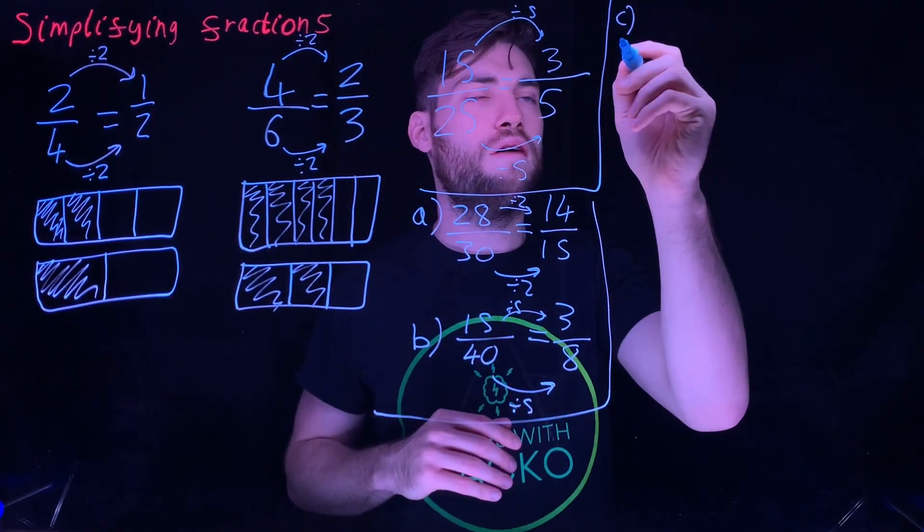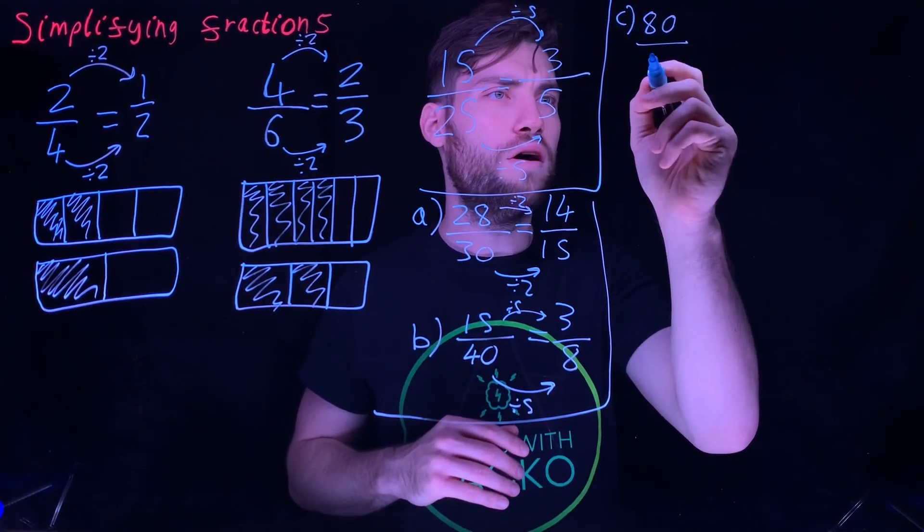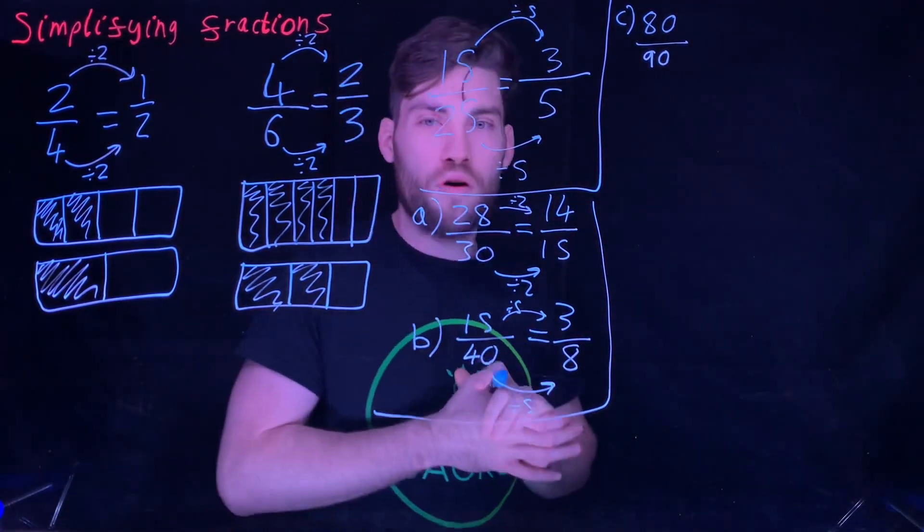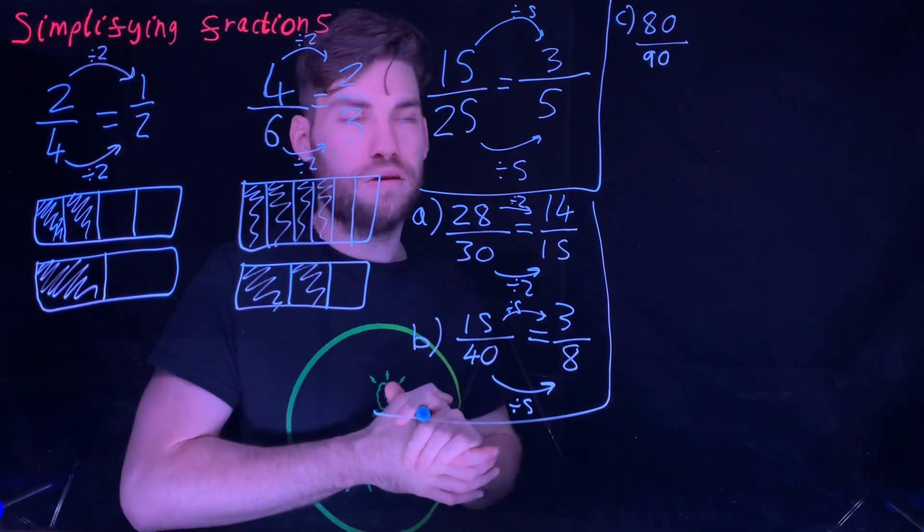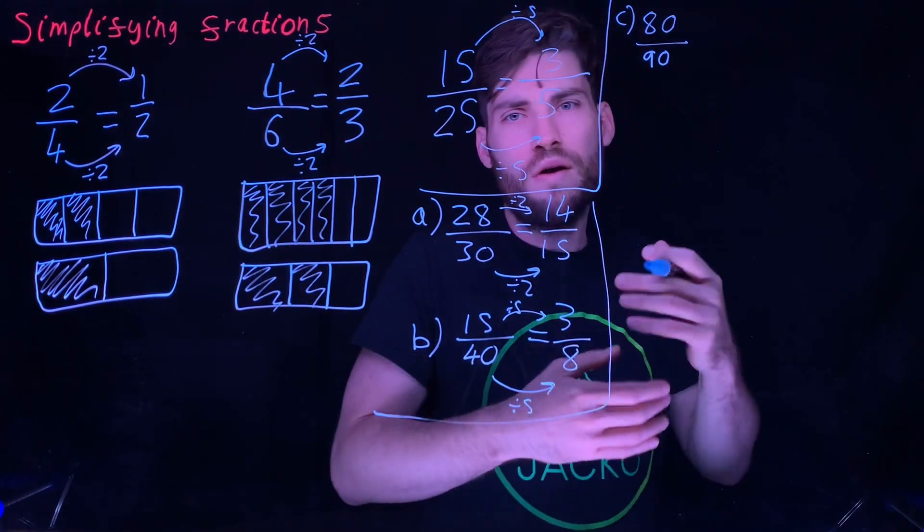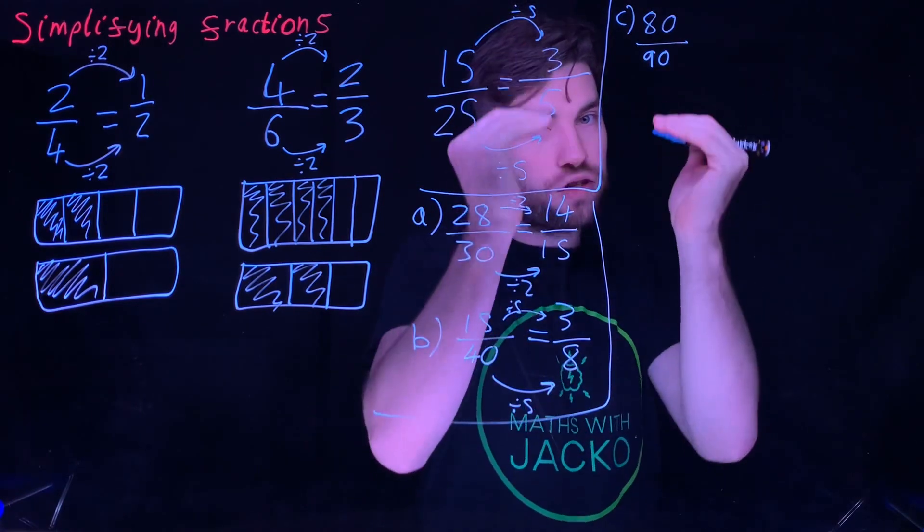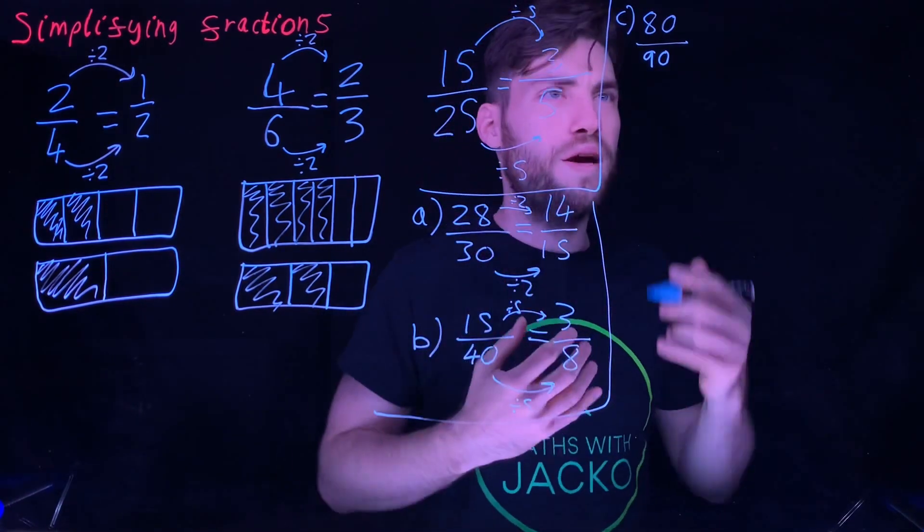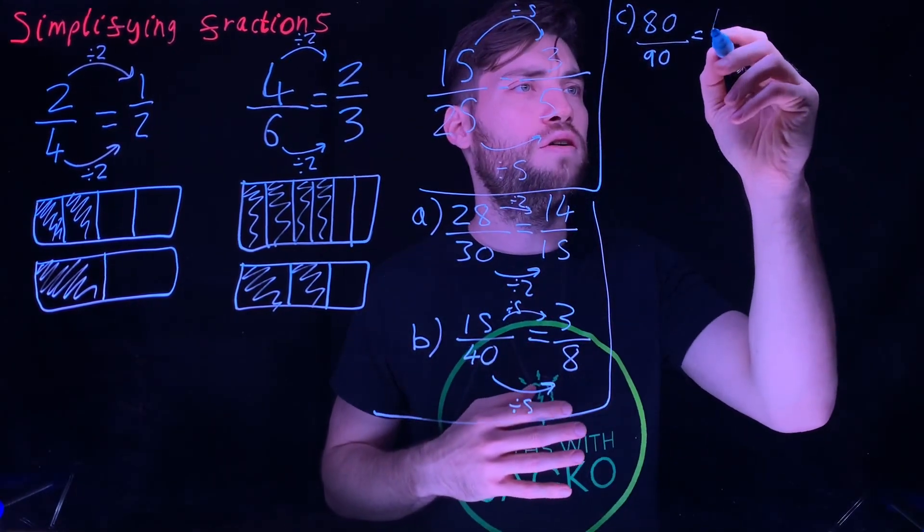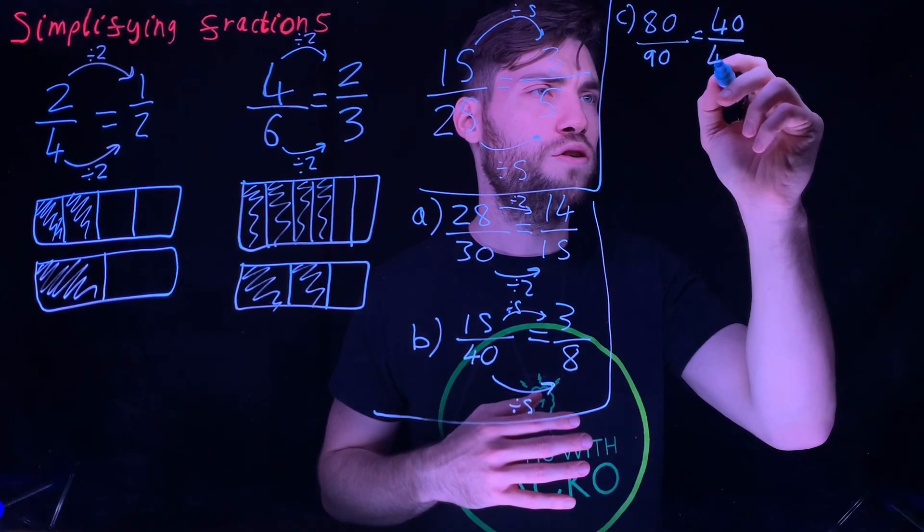Have a go at this one. Let's say we've got 80 over 90. Pause the video. Hopefully you've seen 10 goes into it. So I can go straight into 8 over 9. However, let's say you didn't know that 10 goes into that number. You could technically just keep halving the number as much as you can. You could go, I'm not sure what the biggest factor is, but I know if I half it, because both numbers are even, I get 40 or 45.